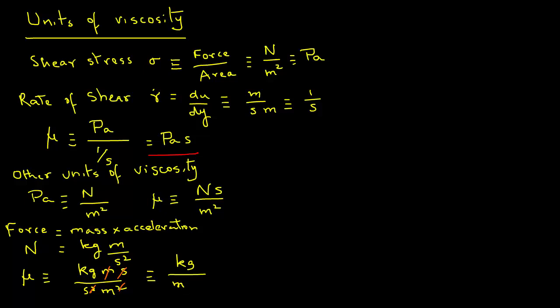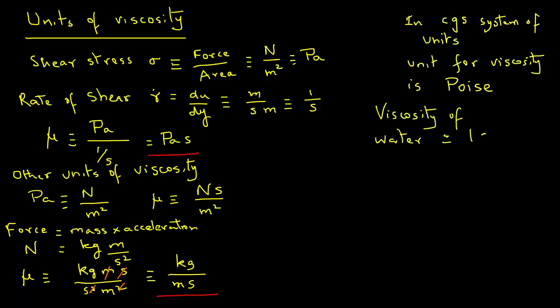In the CGS system—that's the centimeter gram system—the unit that is used for viscosity is called poise. The viscosity of water at ambient temperatures is about one centipoise. In our calculations, we will mostly deal with the SI system. So either viscosity is expressed as Pascal seconds or as kilogram per meter second.